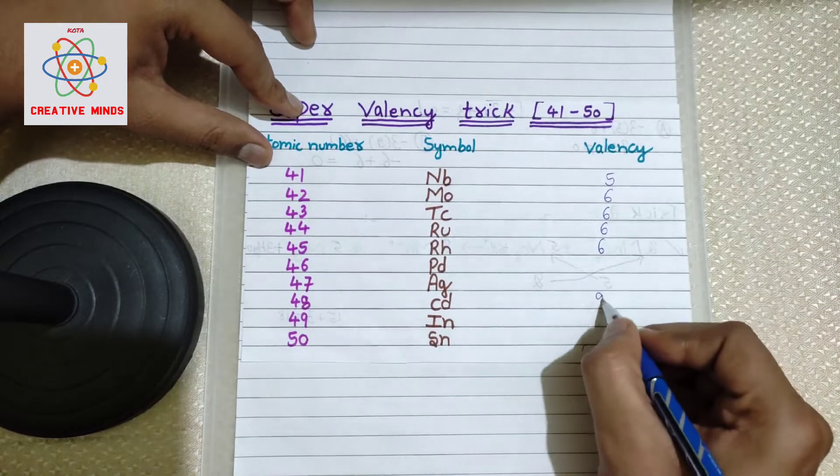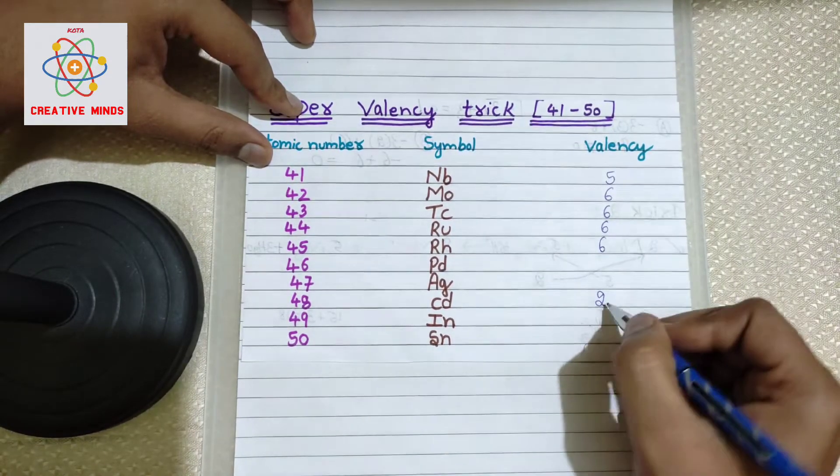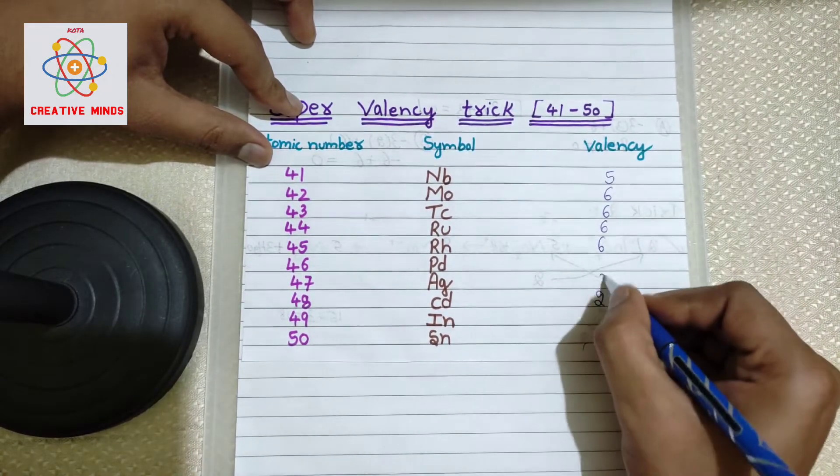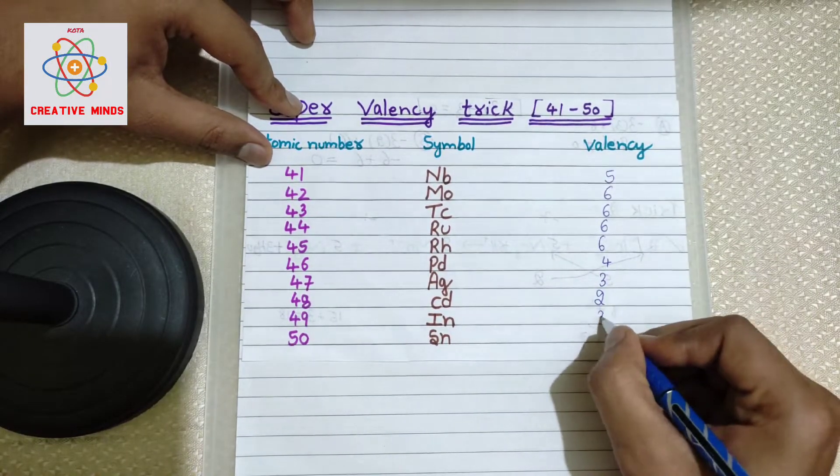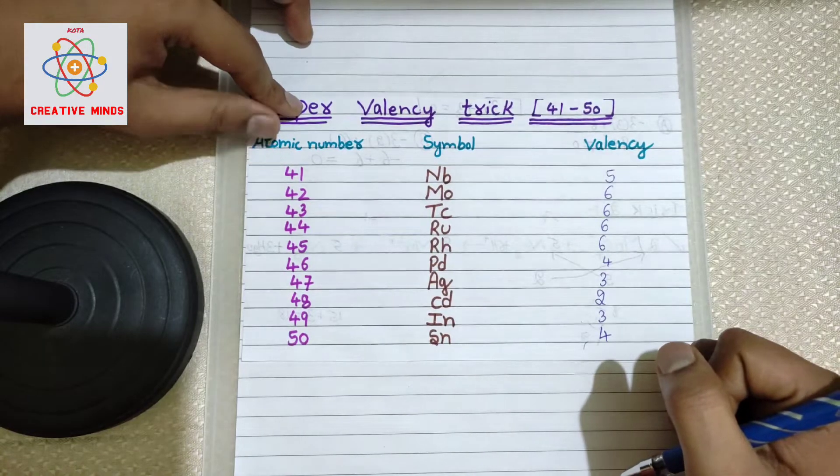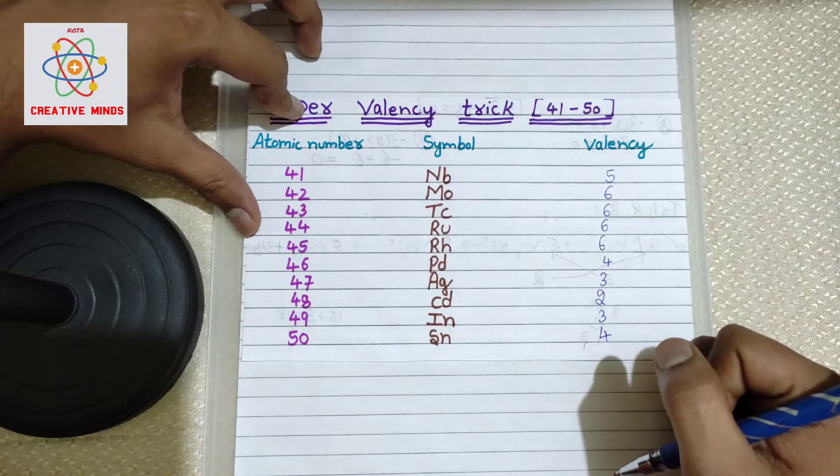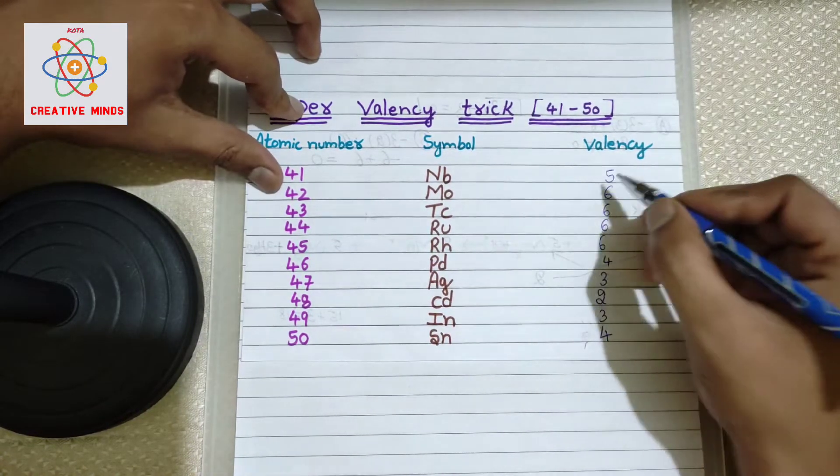Very simple, just keep on adding one. Two plus one, three. Three plus one, four. Again in the bottom also do the same thing. Two plus one, three. Three plus one, four. That's all. You got your valences from atomic number 41 to 50 within few seconds. So simple. First write five.